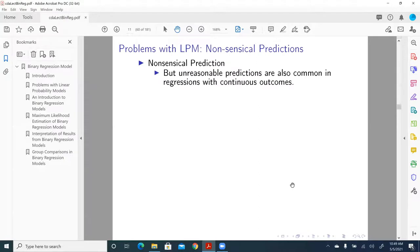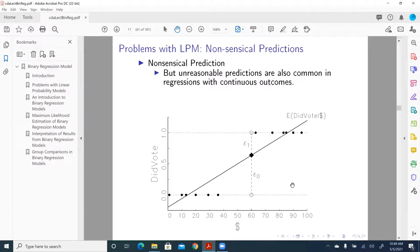Also, nonsensical predictions. We're going to have nonsensical predictions. Here, let's say we have an individual with $100,000. The prediction is here, so it's greater than 1.0. It is impossible to have a probability that's greater than 1. Same thing here - if we have an individual that has less than $10,000, the prediction is going to be somewhere here, which is below zero, a negative number. That's again nonsensical.